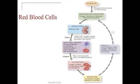Figure 19.6 on page 706 shows a negative feedback loop. The main stimulus for erythropoiesis is hypoxia, which is an oxygen deficiency condition at the tissue level. You can review the steps to this negative feedback loop on your own time.